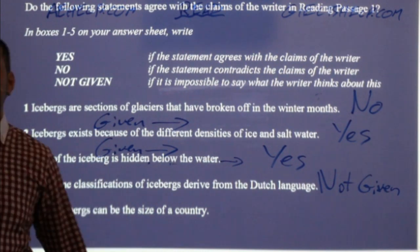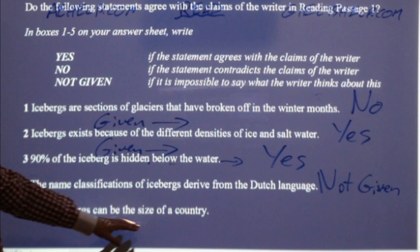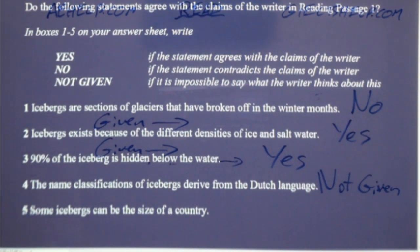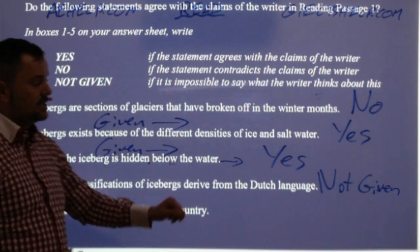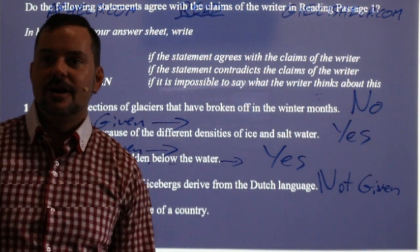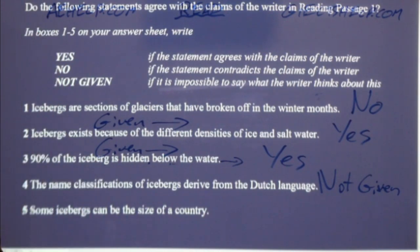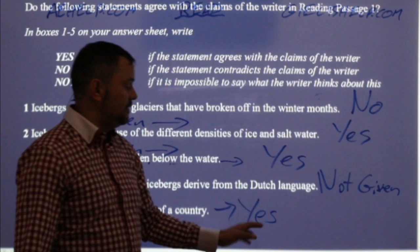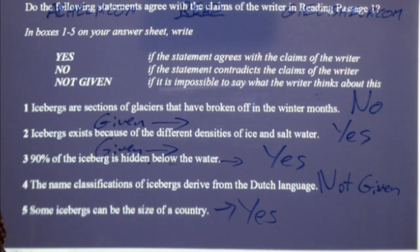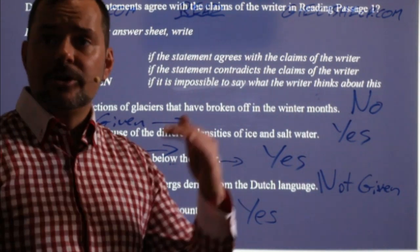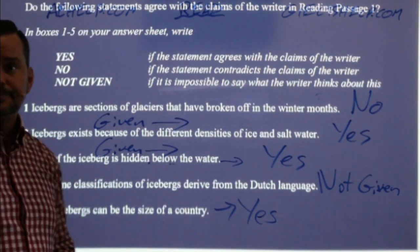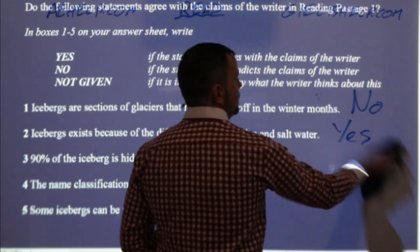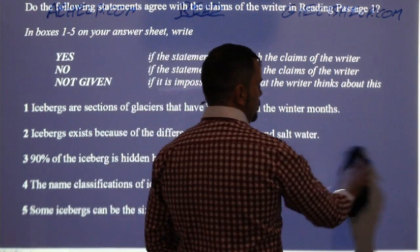Number five: 'Some icebergs can be the size of a country.' Is it important to know how big icebergs can be and whether they can be the size of a country? Yes, absolutely. And is it true? Yes — the passage told us the largest iceberg was approximately the size of Belgium. So the correct answers are: no, yes, yes, not given, and yes. Yes/no/not given questions are actually one of the easiest question types when you use the correct strategy, because logic can really help you figure it out.